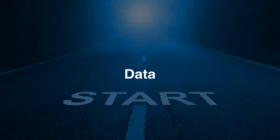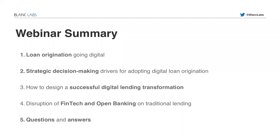Just to wrap up and leave you with this: we should start with the data. As we said at the beginning of the presentation, underwriting and lending is a very data-driven practice, and understanding our data needs, our current status, and where we want to get to is the first step in this journey. Remember that we can work with any system, but we have to pick the right system that fits our needs. To summarize: we talked about loan origination going digital — the comparison between the traditional and digital paradigm — the strategic decision-making drivers, designing a successful digital lending transformation, the framework for the technological journey, and the disruption of fintech and open banking on traditional lending and how to be ready for it.